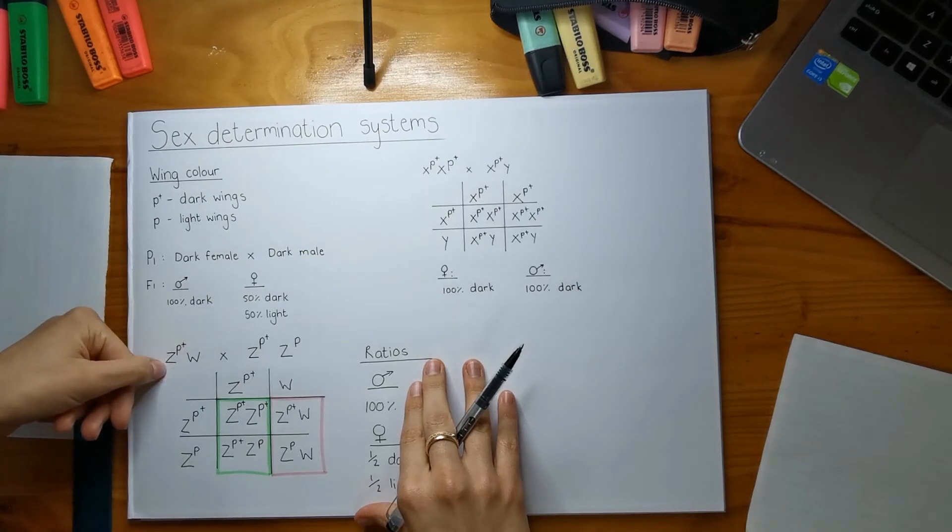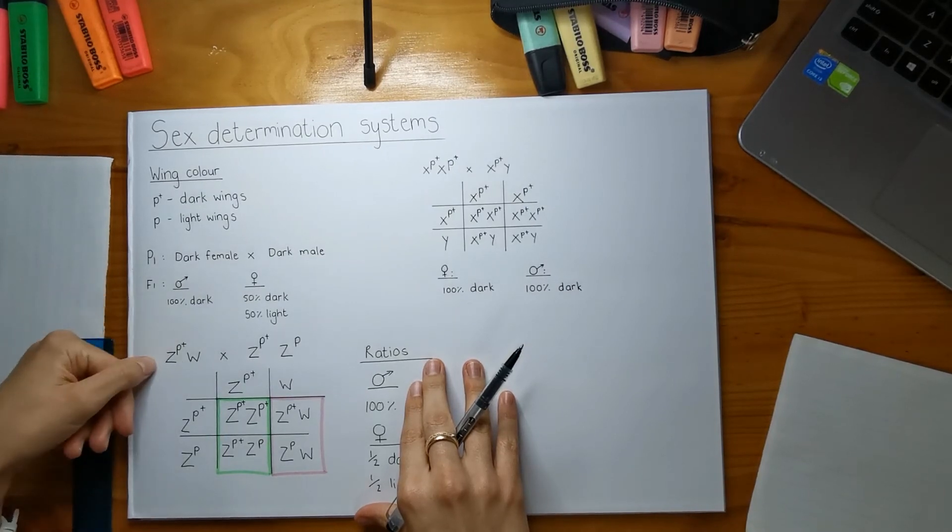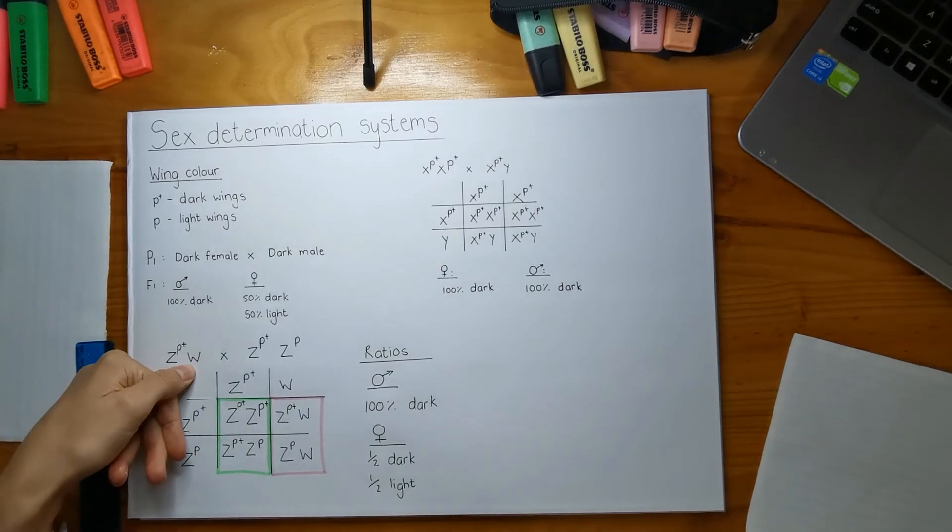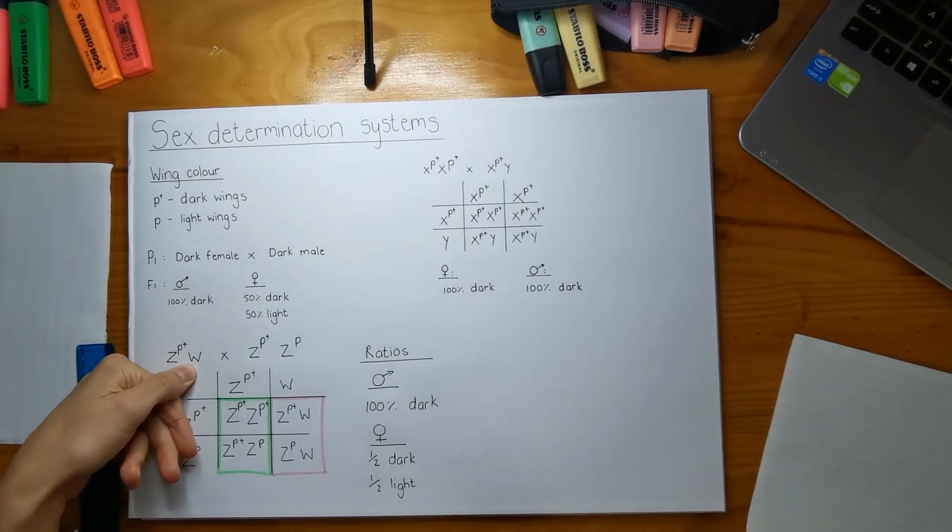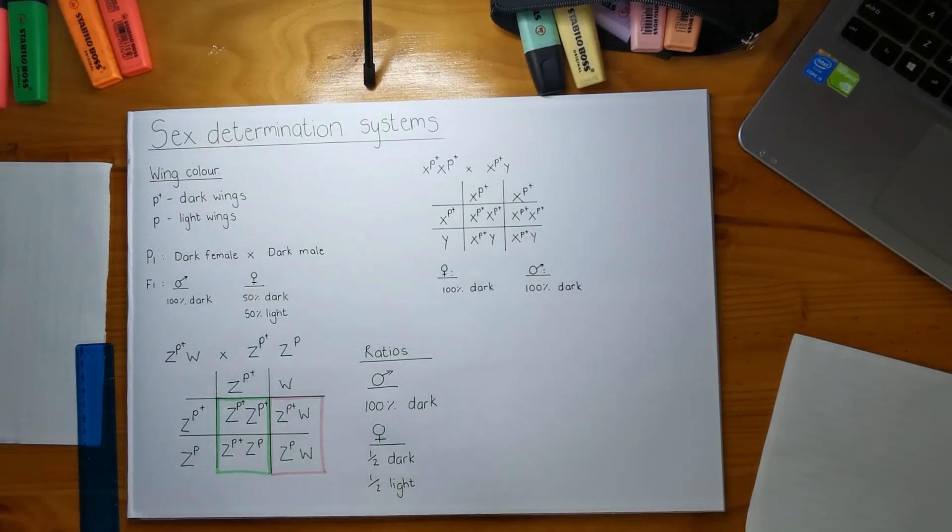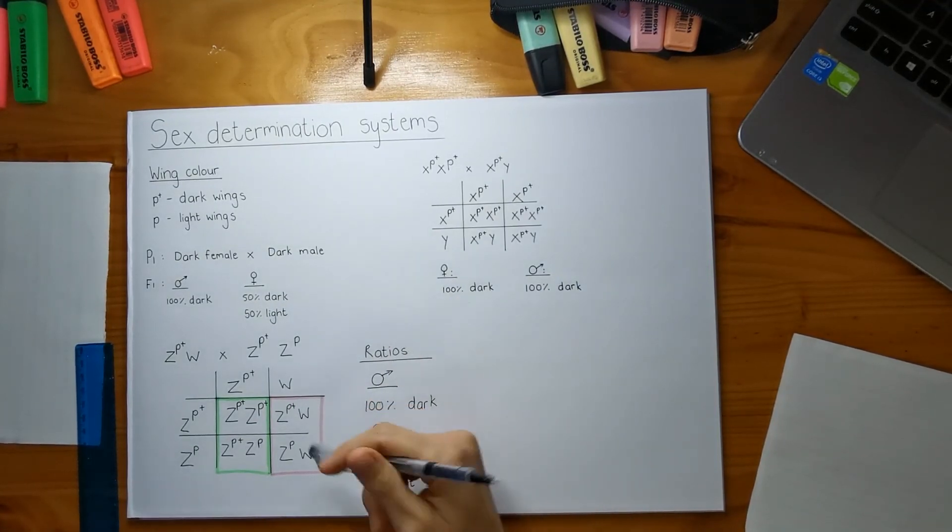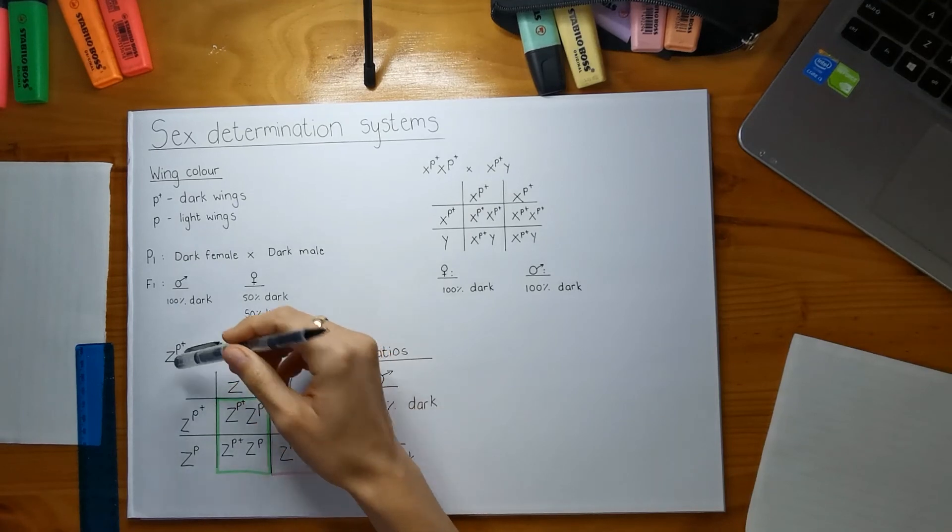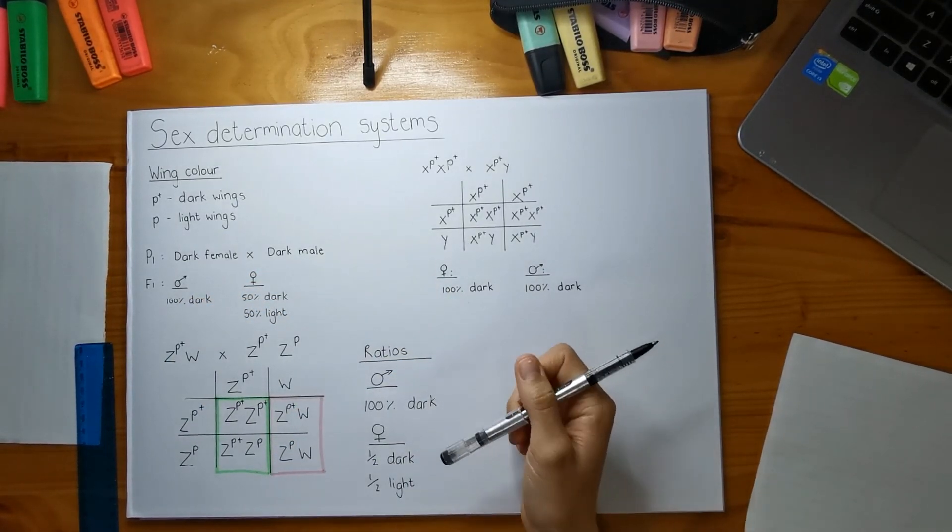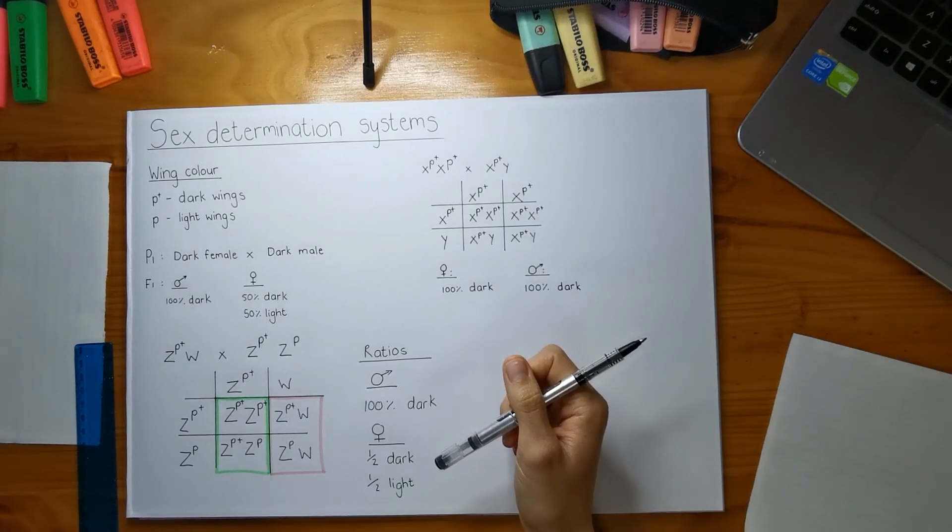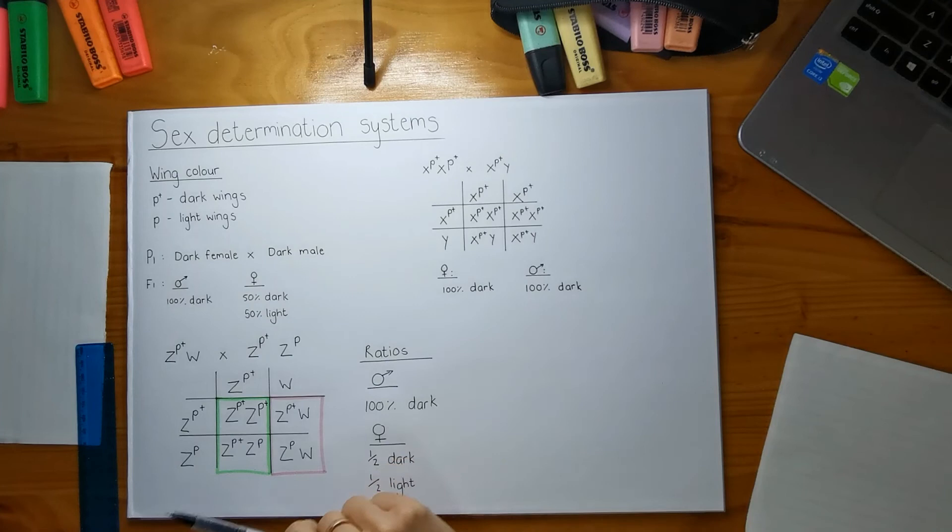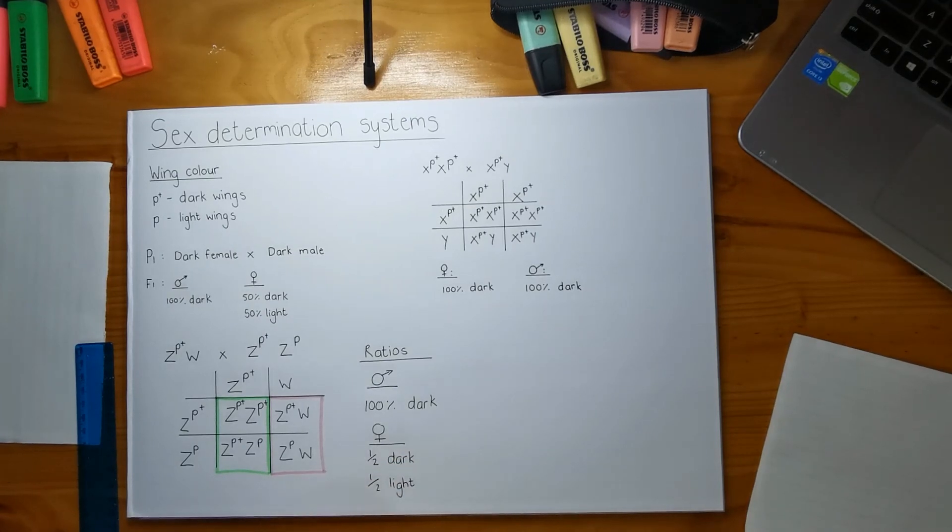Remember all your genes on the Z chromosome are only expressed. Well they are genes on the W chromosome, just not a whole lot. Obviously you've given all your genotypes of the parents and the offspring.